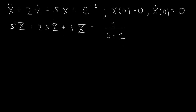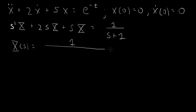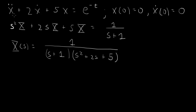We've now Laplace transformed the differential equation, and it becomes an algebraic equation for capital X, which we can easily solve. So we obtain capital X as a function of the s variable: 1 over (s plus 1) times (s-squared plus 2s plus 5). The beauty of the Laplace transform technique is that we've gone from a differential equation to an algebraic equation. We found a solution for X in the Laplace transform space, in the s-space.